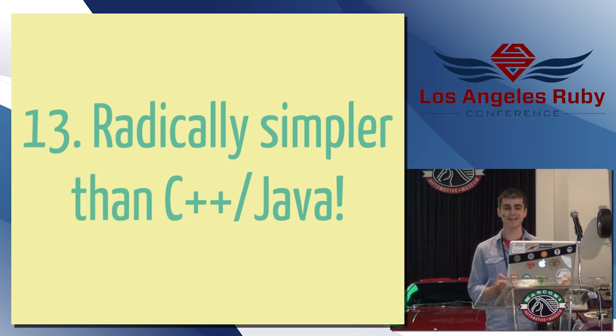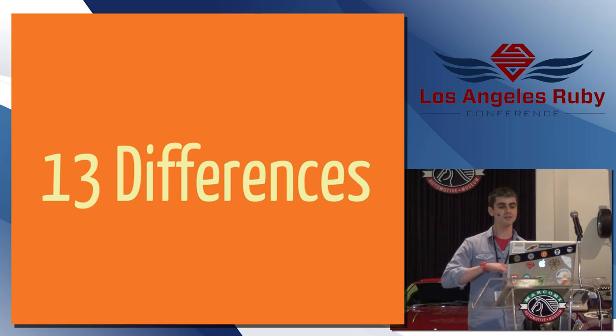And finally, each language is definitely radically simpler than C++ or Java. So, let's talk about 13 differences between the two languages.